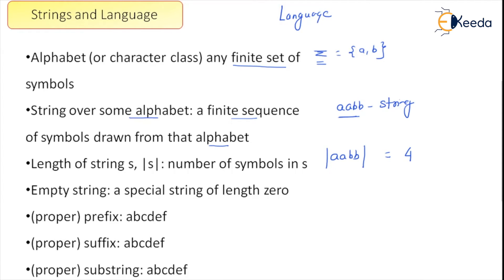An important concept is the empty string, or the zero-length string. We have a symbol for this called epsilon. The length of epsilon is equal to zero — it is a zero-length string.